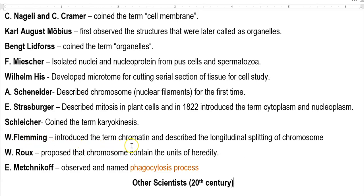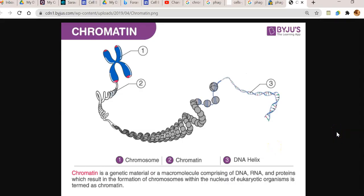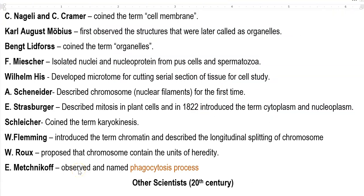The next contribution is by Fleming. He introduced the term 'chromatin' and described the longitudinal splitting of the chromosome. Chromatin refers to the special structure present in the chromosome that is very important to the formation of chromosome structure. As shown in the diagram, the DNA helix at lower order is packed into higher order structures referred to as chromatin. We will study chromatin in detail in the fourth unit, covering how the higher order structure of a DNA molecule is formed.